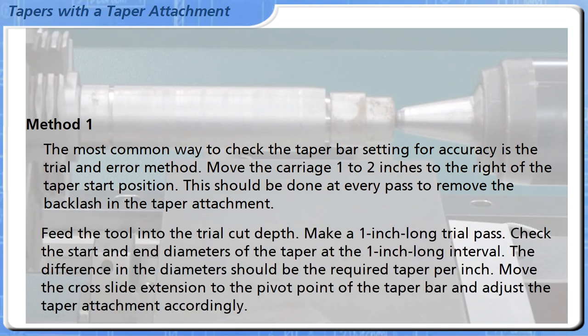Feed the tool into the trial cut depth. Make a 1 inch long trial pass. Check the start and end diameters of the taper at the 1 inch long interval. The difference in the diameters should be the required taper per inch.